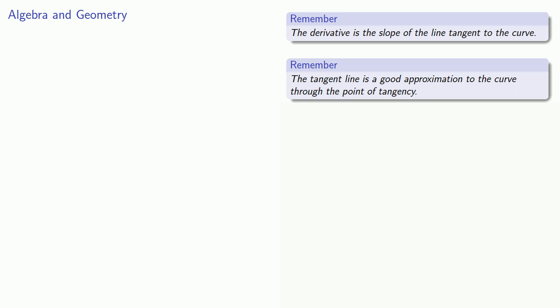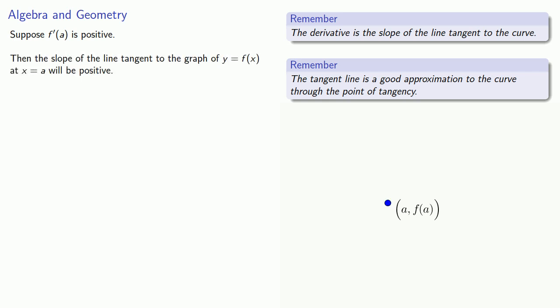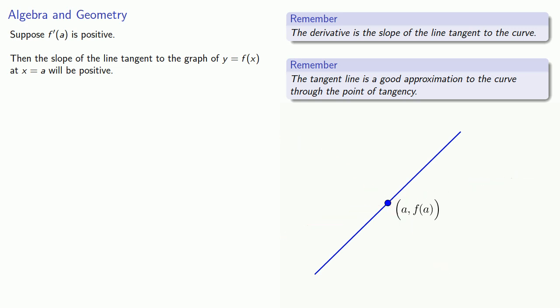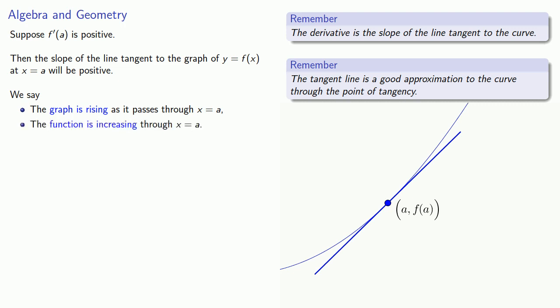So suppose we know that the derivative is positive. Then the slope of the line tangent to the graph of y equals f of x at x equals a will be positive. So wherever our point is, the tangent line will look like this. And because a tangent line is a good approximation to the curve through the point of tangency, we know what the curve looks like — not this, not this, but maybe something like this. And so we say that the graph is rising as it passes through x equals a, or we say that the function is increasing through x equals a.